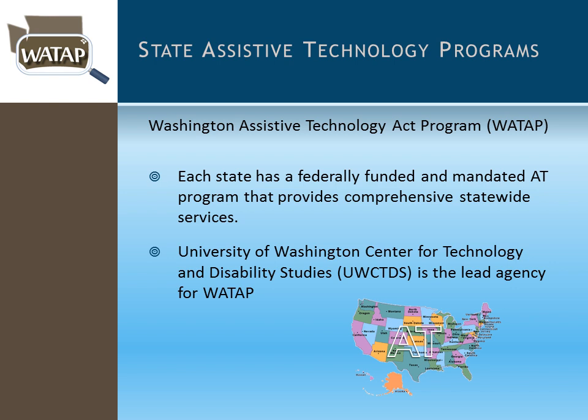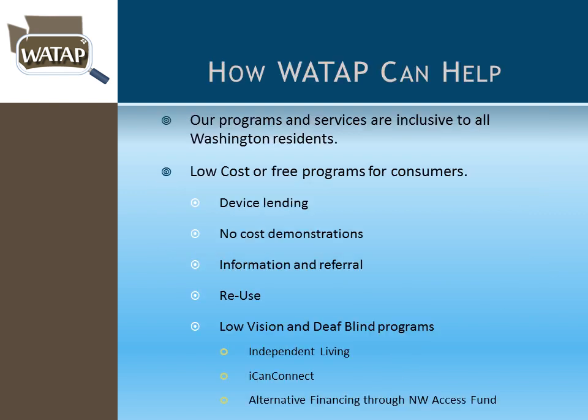I work for WATAP, and what we do here at WATAP is all about assistive technology. We are a federally funded program — every state has one. We are housed at the University of Washington. Our primary goal is working with individuals across the lifespan: kids and older adults in all areas of disability. Our core programs are client-centered and inclusive to Washington residents only. Most of our programs are either free or low cost to individuals with a disability.